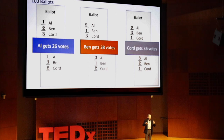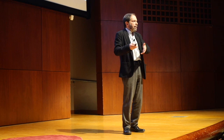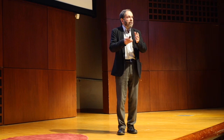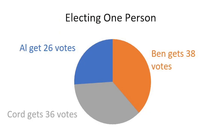How should we decide who wins? Let's say there are 100 ballots and Ben gets 38 votes, Cord gets 36 votes, and Al gets 26. One option is Ben wins — he got the most votes. But another option is you might want majority support for the ultimate winner, so you might have a runoff.